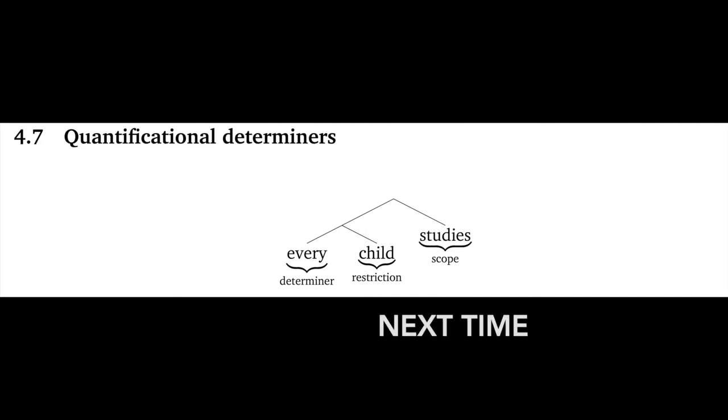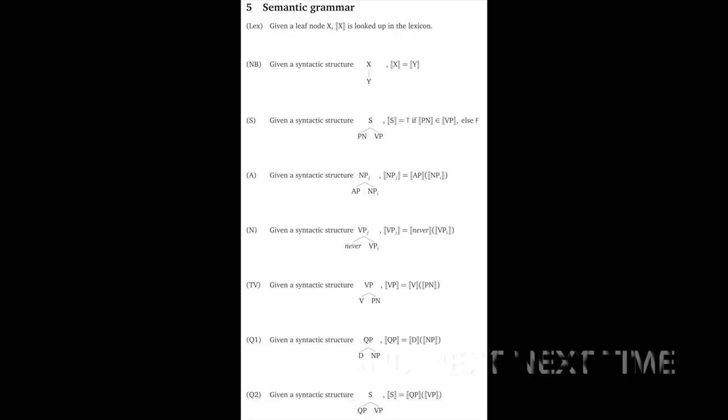Okay, great. We've made an excellent start on our semantic lexicon. The next step in the process is to define meanings for quantificational determiners. Those are the most complex meanings we'll consider in this course, so they get their own dedicated screencast. After that, we'll have our entire lexicon, and we'll be able to define our full semantic grammar using it.